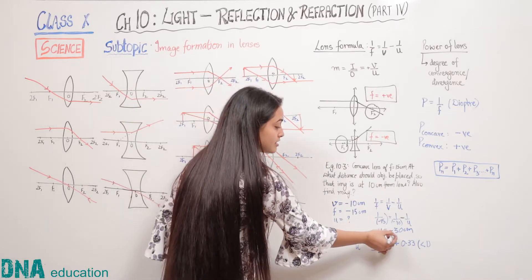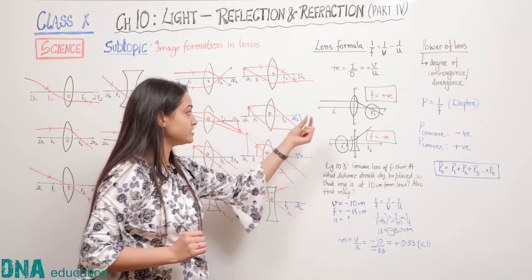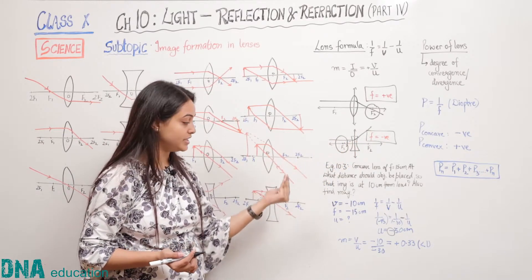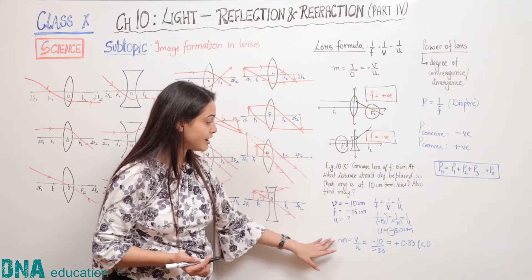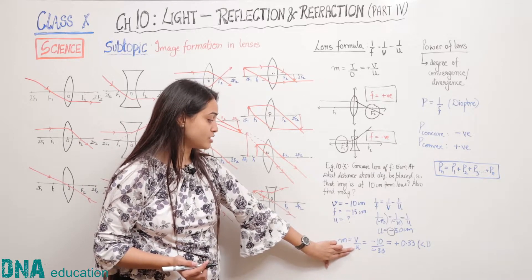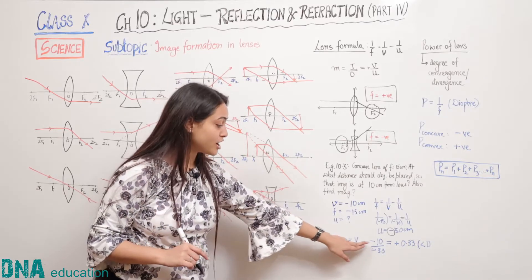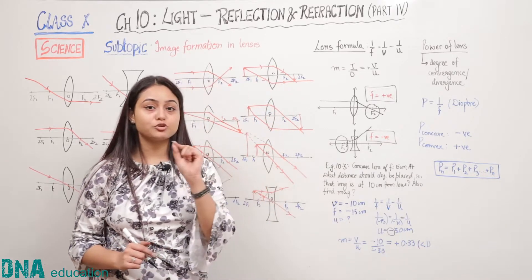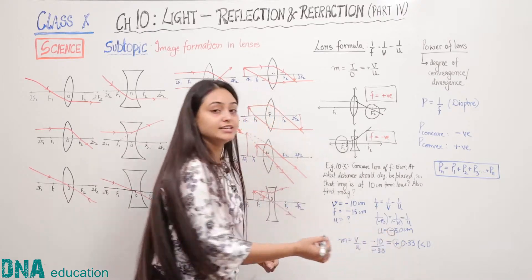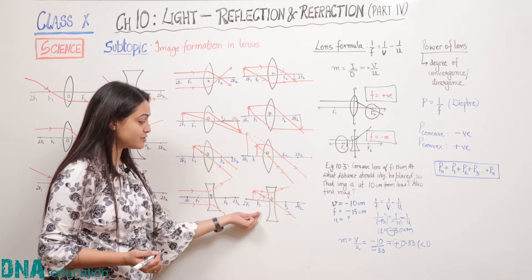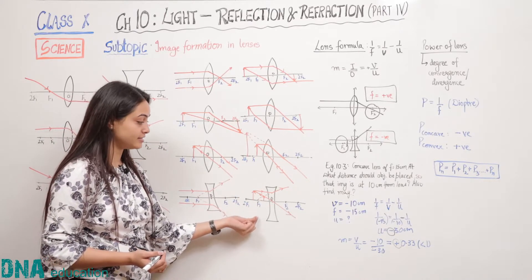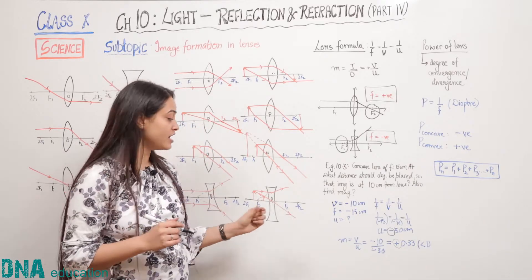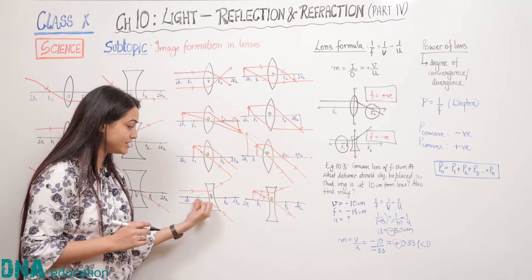The minus sign in the object distance indicates that the object is placed on the negative x-axis, which is theoretically correct because we always place the object on the left side of the lens or mirror. To find magnification, we put m = v/u = (−10)/(−30) = +0.33. The positive magnification indicates that the image is virtual and erect, which is correct for concave lenses. Also, 0.33 is less than 1, meaning the image is diminished — again consistent with theory, as concave lens images are always diminished.